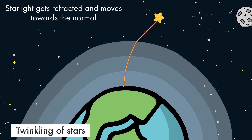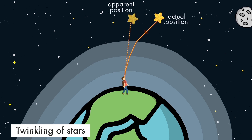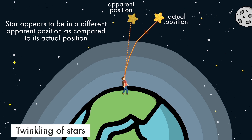Due to this refraction occurring in the various layers of air in our atmosphere, the starlight moves towards the normal and bends while reaching the surface of the earth. To an observer present on the surface of the earth, the starlight that is coming to them is actually bent. So the observer perceives the starlight to be coming from a different position. That is why the star appears to be in a different apparent position compared to its actual position — and this apparent position is higher than the actual position of the star.